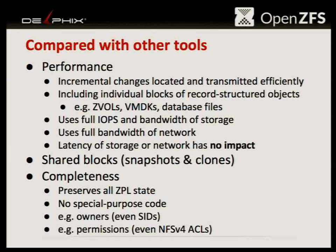That goes to the next point: completeness. Because of the layer that send and receive operates at within ZFS, it's able to preserve all of the ZPL state. The ZPL is the ZFS POSIX layer — it implements things like directories, rename, file ownership, special permissions, and so forth. It preserves all that state without any special-purpose code. Unlike rsync or tar, you don't need to add special-purpose code for new property types like Windows SIDs or NFSv4-style ACLs — they just come along for the ride.